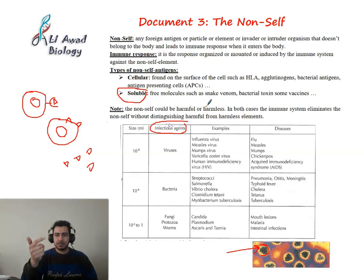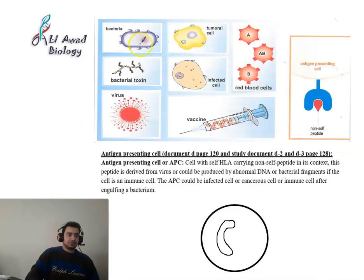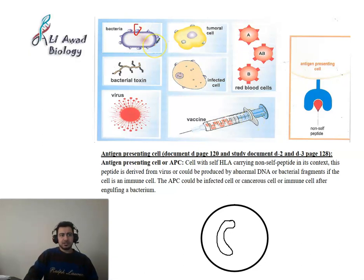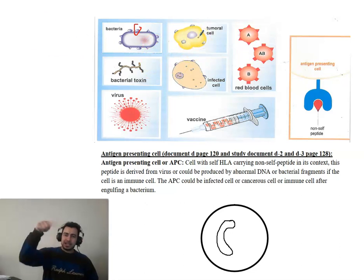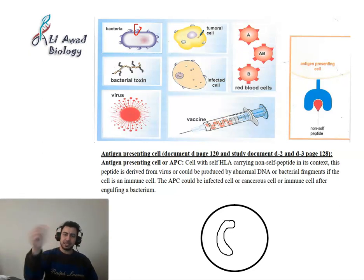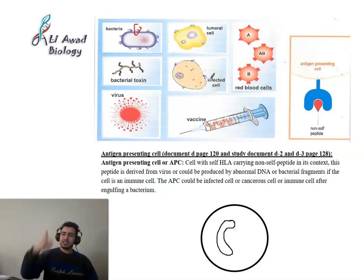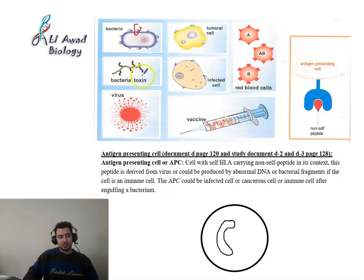For example, some types of food trigger an immune system attack causing allergies. Now let's classify these into cellular or soluble antigens. Bacteria surface antigens, tumoral cells, and cancer cells with HLA plus non-self peptide are cellular antigens. Red blood cells have cellular antigens. Infected cells with self HLA and non-self viral peptide are cellular antigens. Bacterial toxins are soluble antigens.